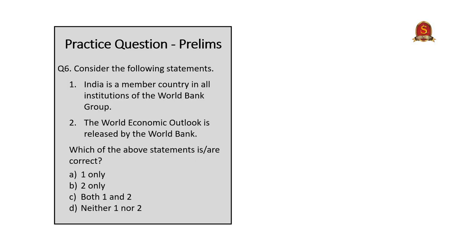The sixth question is about the World Bank, asking for correct statements. Statement 1 — India is a member country in all the institutions of the World Bank group — is false, because India is not a member of ICSID. Statement 2 — the World Economic Outlook is released by the World Bank — is also false, because the World Economic Outlook is released by the IMF. The correct answer is D: neither 1 nor 2.